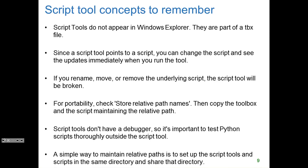The take-home messages are: script tools don't appear in Windows Explorer — they are part of the toolbox. Since a script tool points to a script, you can change the script and see the updates immediately when you run the tool. If you rename, move, or remove the underlying script, the script tool will be broken. For portability, check 'Store Relative Path Names' when setting up the tool in the wizard, then copy the toolbox and the script maintaining the relative path. Script tools don't have a debugger, so test your script thoroughly outside the script tool before creating it.